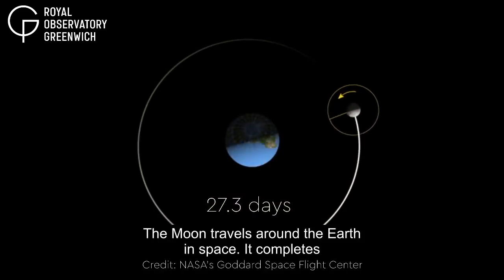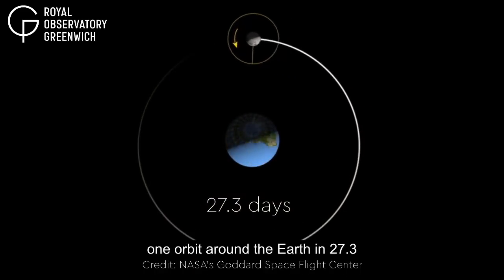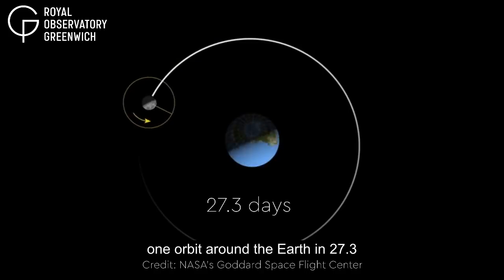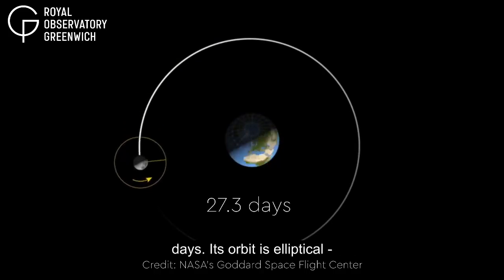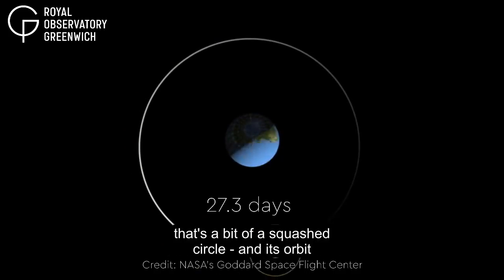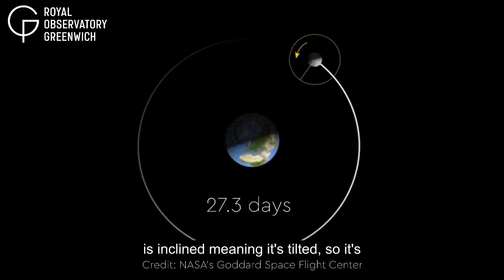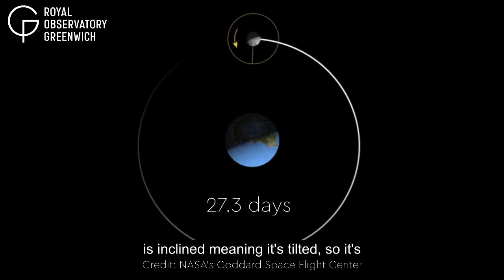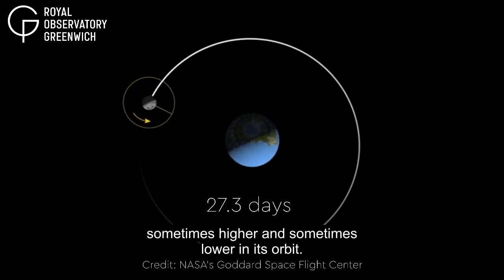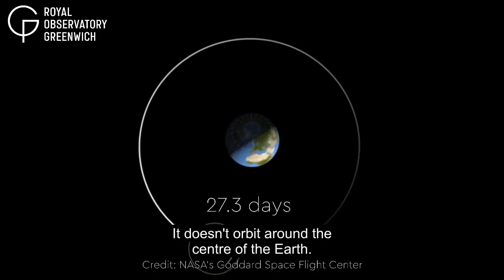The Moon travels around the Earth in space. It completes one orbit around the Earth in 27.3 days. Its orbit is elliptical — that's a bit of a squashed circle — and its orbit is inclined, meaning it's tilted, so it's sometimes higher and sometimes lower in its orbit. It doesn't orbit around the centre of the Earth.